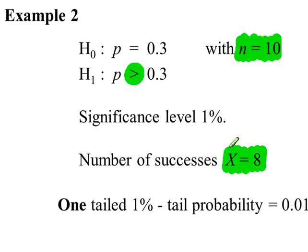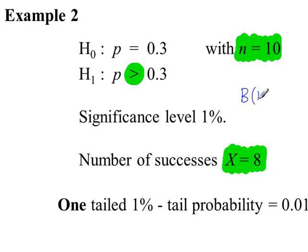We work out a probability based on this value here, but we're going to do more than or equal to 8 because H1 says more than. Then we compare that probability to the significance level 0.01. We go to the binomial distribution with 10 trials and p = 0.3, the probability of success.